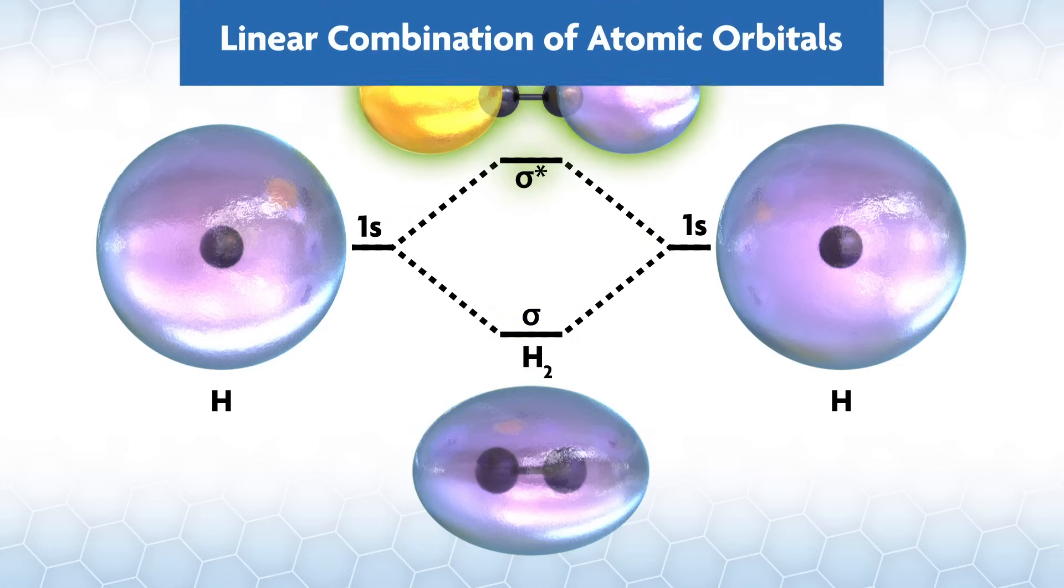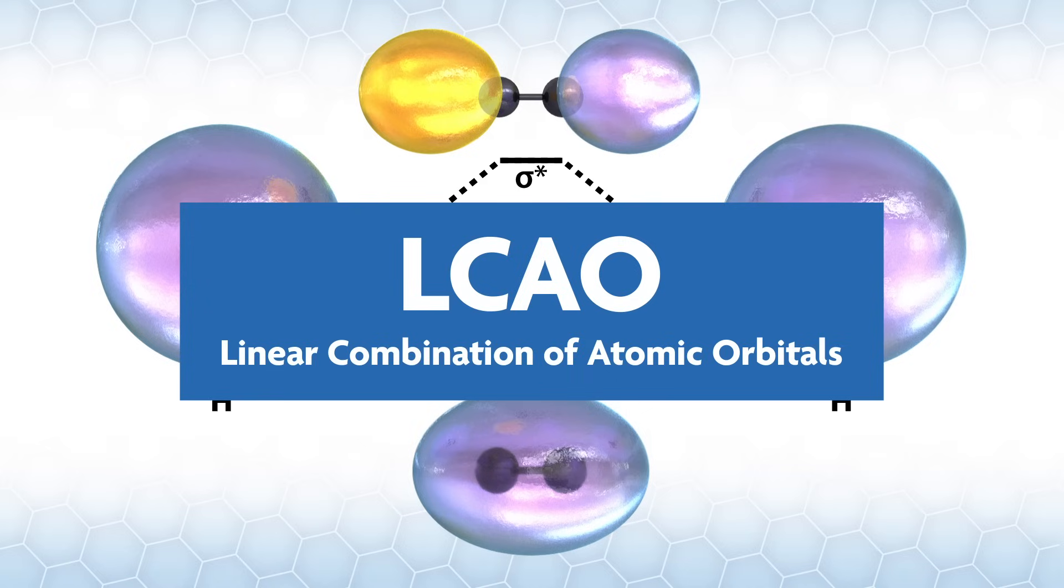This is an approximation called linear combination of atomic orbitals, or LCAO. Often, this is used to find the MOs for a system.